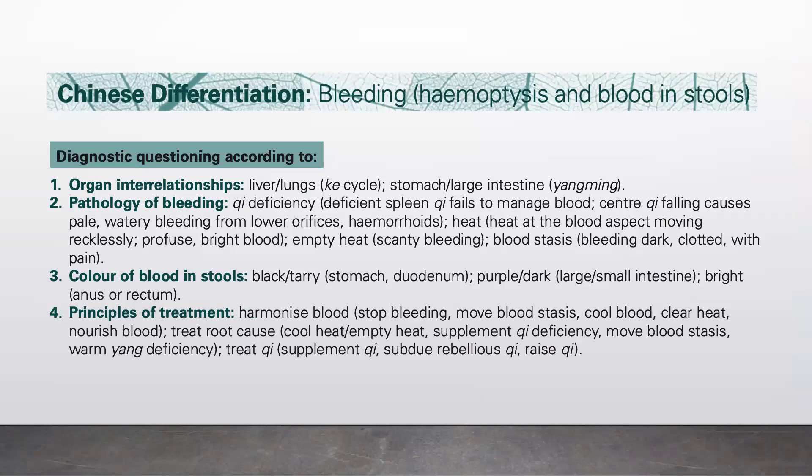Next are the principles of treatment. We harmonize the blood, which includes stopping bleeding, moving blood stasis, cooling blood, clearing heat, and nourishing blood. We also treat the root cause: cool heat for excess heat patterns, supplement qi in deficiency, move blood in stasis, nourish yin in yin deficiency, treat qi in qi deficiency, supplement qi, subdue rebellious qi, or raise qi in qi sinking.